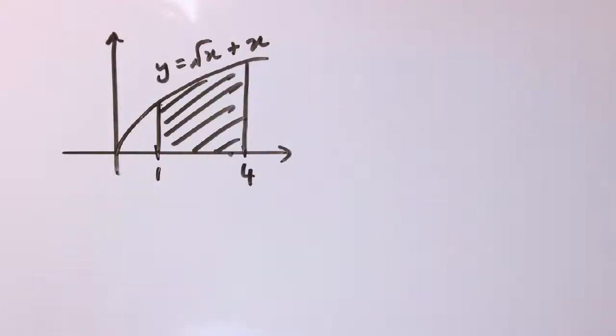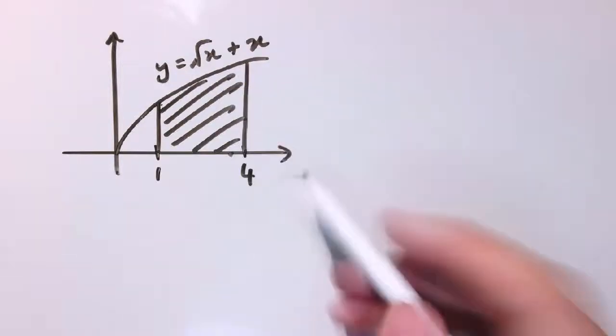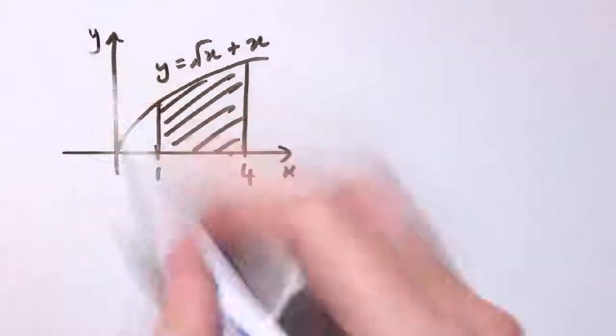Here's another one. I want here the curve y equals root x plus x and I want the area enclosed between the lines x equals 1, x equals 4, and the x axis here in the curve.